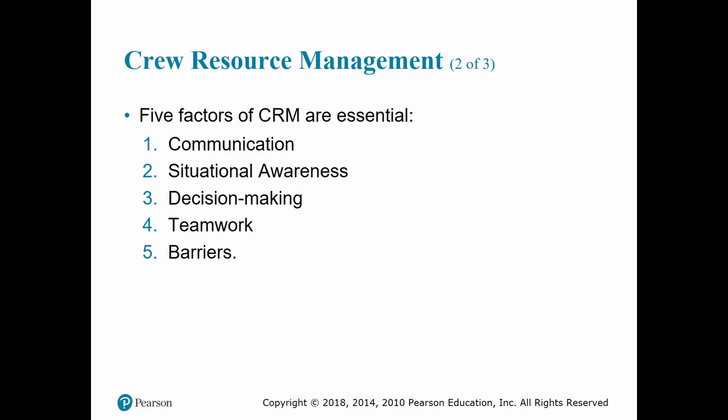There are five factors of crew resource management that are essential. The first is communication. Communication is key to eliminating mistakes that could potentially occur due to misunderstandings. We communicate with closed-loop communication — I say something and get a clear yes or no. We need to ensure we reduce the potential for erroneous or misinterpreted information. If there is any potential for misinterpretation, we need to clarify our message to reduce the chance of a potential error from occurring.